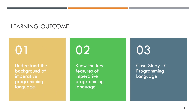The learning outcomes for this chapter are: number one, to understand the background of imperative programming language; secondly, to know the key features of imperative programming language; and thirdly, the case study using C programming language.